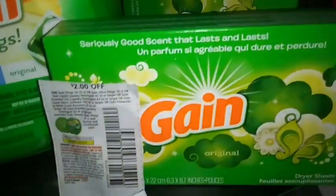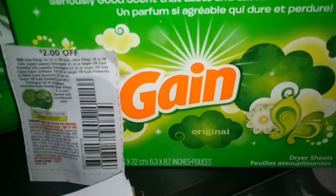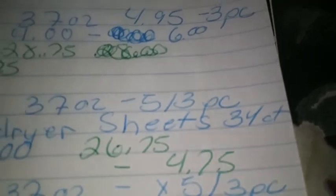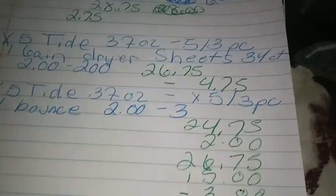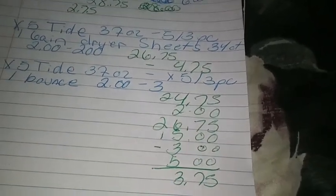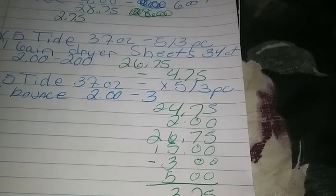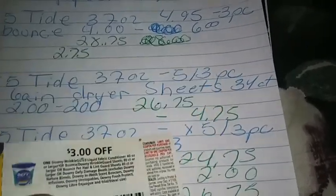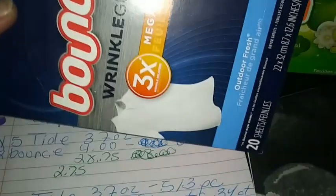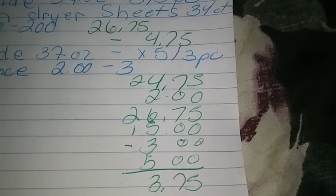Let's switch it up a little bit. Let's buy the Gain sheets — completely free with that $2.00 paper coupon. Your total after all coupons are applied, even your $5 off $25, is going to be $4.75. I did these deals last weekend. We're going to buy 5 Tide, 1 Bounce — that comes up to $26.75, $15.00 in coupons because you're going to use 5 of these, and then you're going to use your $3.00 paper coupon on your Bounce. So there's my math: $3.75 for 5 Tide and 1 Bounce.